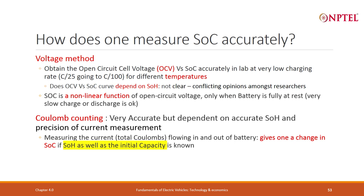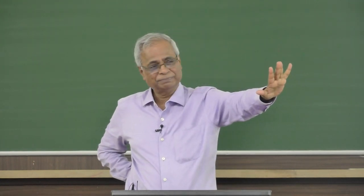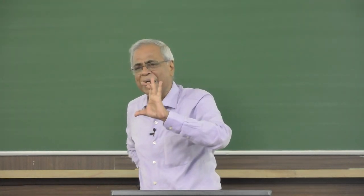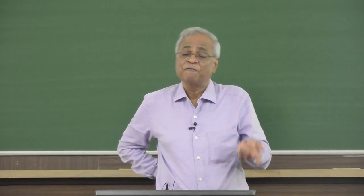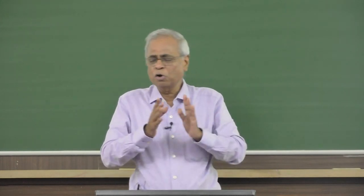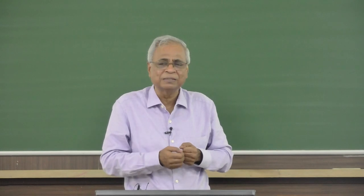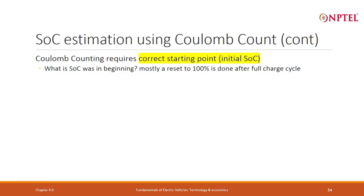The very interesting method used is: take your initial reference point at any time using open circuit voltage, with curves already taken in the lab during battery design. Use those curves, keep the battery at rest with no current going in or out, then measure the open circuit voltage. From that OCV you measure the initial state of charge. Now you know your initial SOC, and as Coulombs come in or go out, you can track what the state of charge is. Coulomb counting requires a correct starting point — this is the key point being made.